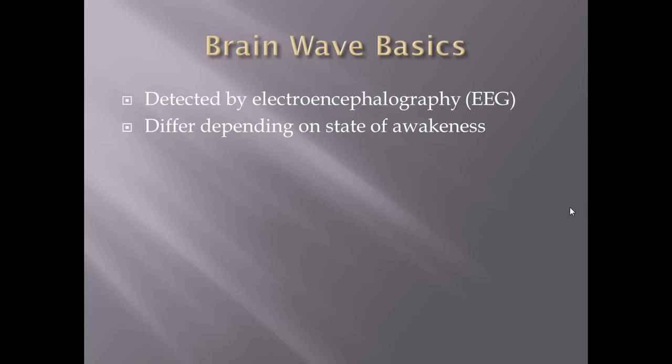Brain waves can be detected by electroencephalography, also known as EEG, and the brain waves differ depending on the state of awakeness. So your brain waves while you're awake differ from brain waves while you're asleep.